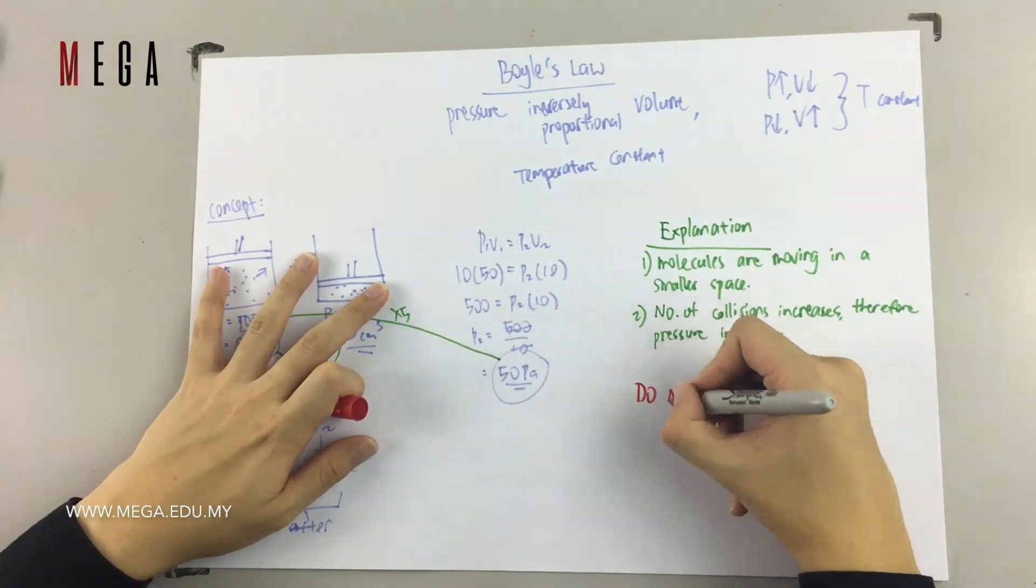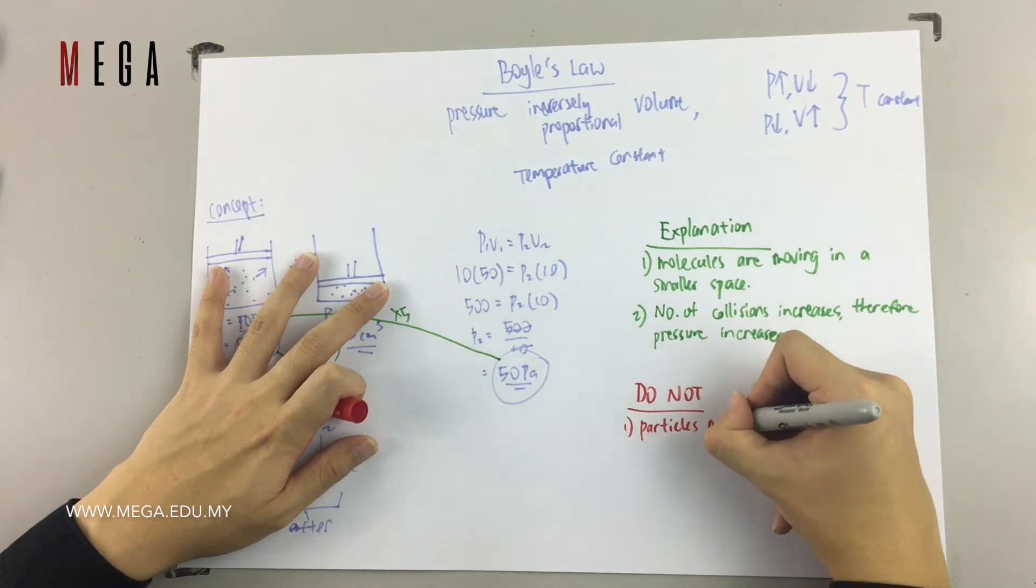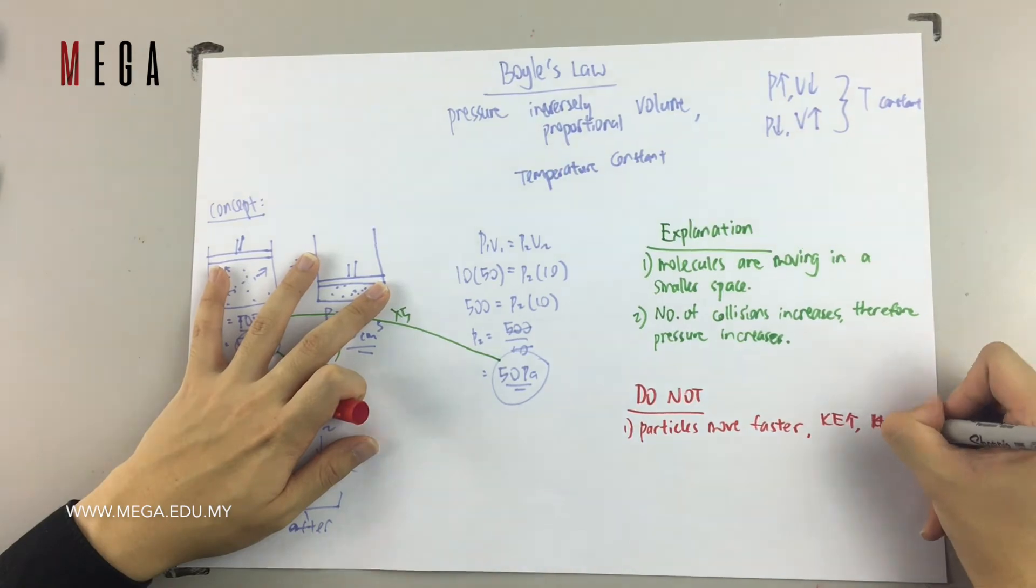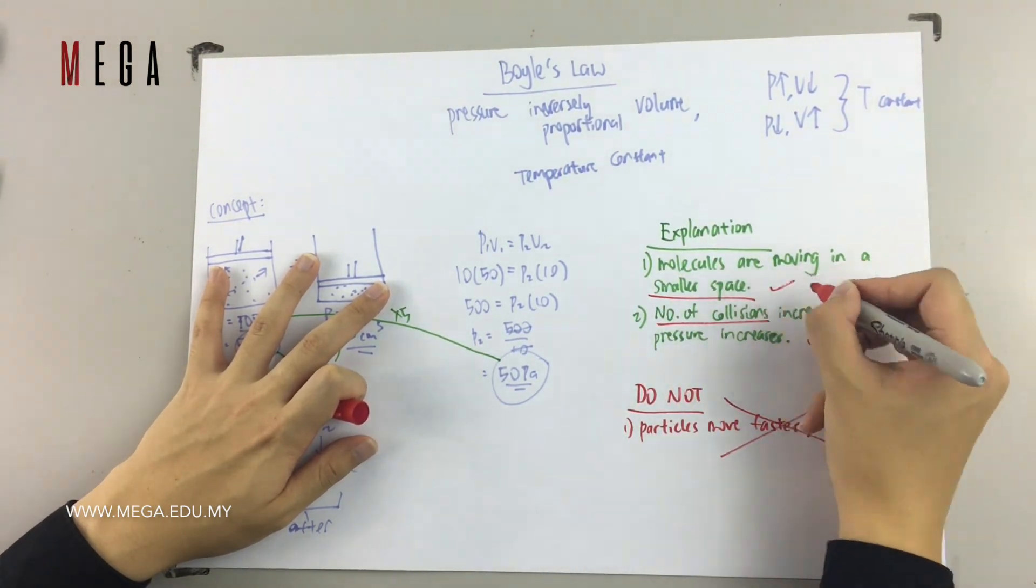What you do not write is you cannot say that the particles are moving faster, therefore they have more collisions. This is totally wrong because you do not gain extra kinetic energy from heat energy because the temperature is constant all the time.